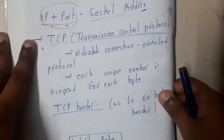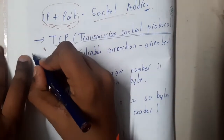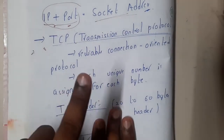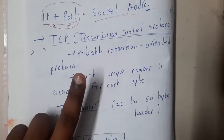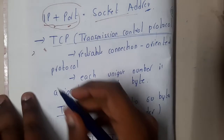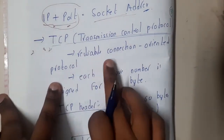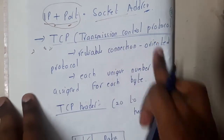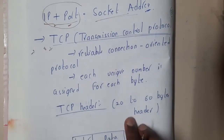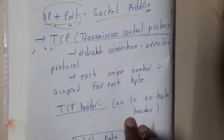Hello guys, we are back with our next lecture. In the last lecture we gave some introduction about the transport layer. In this lecture let us learn about the first protocol which is most commonly used in the transport layer — it is nothing but TCP, which stands for Transmission Control Protocol. We'll be discussing its properties and then moving on to the header structure.